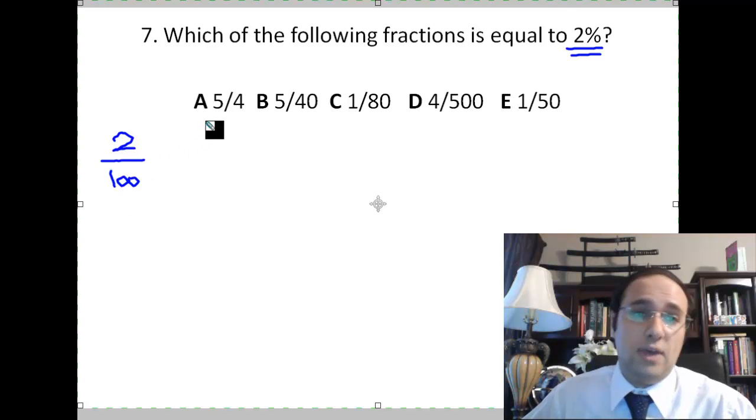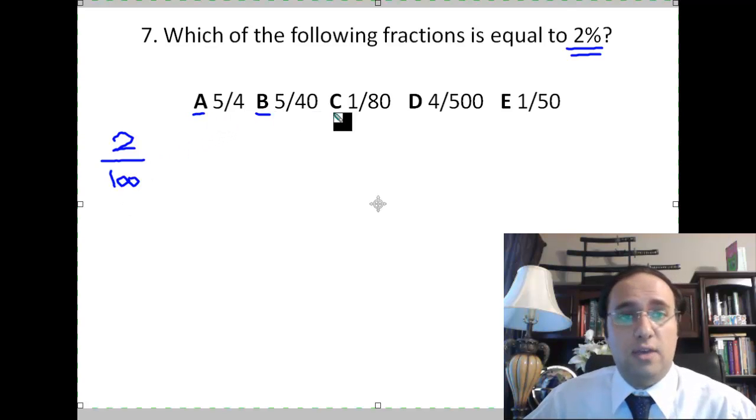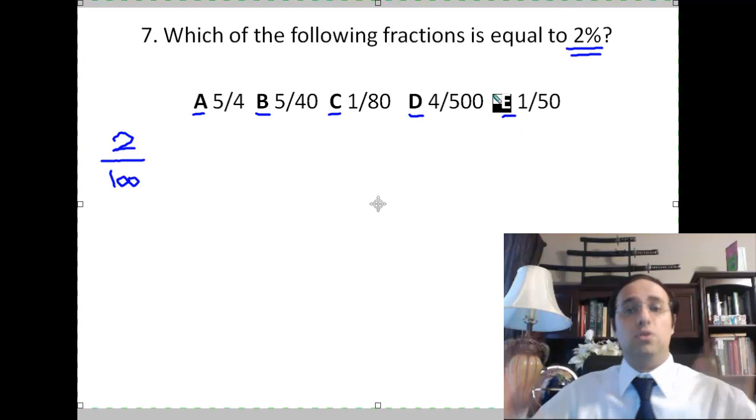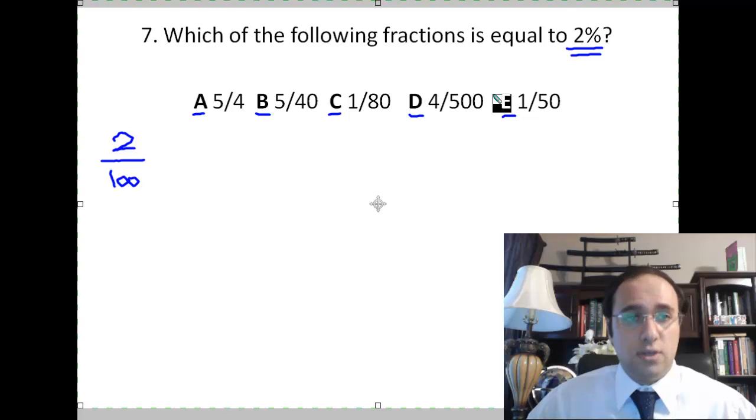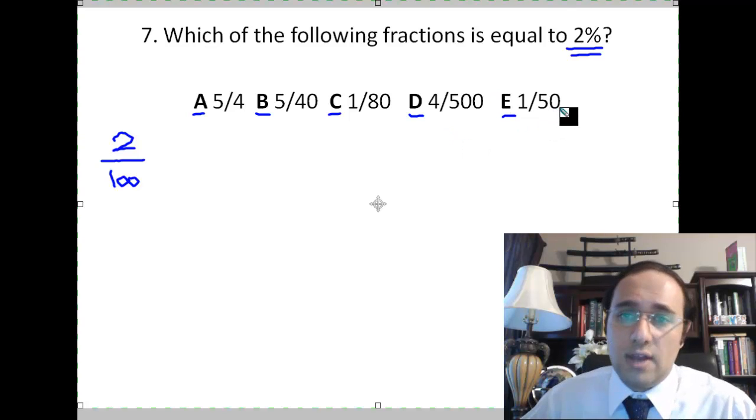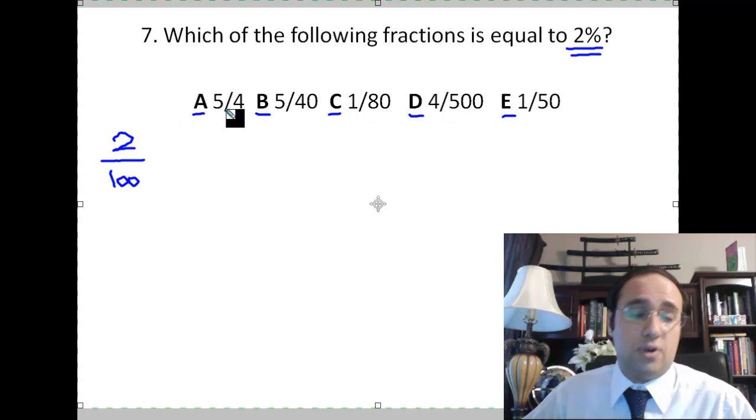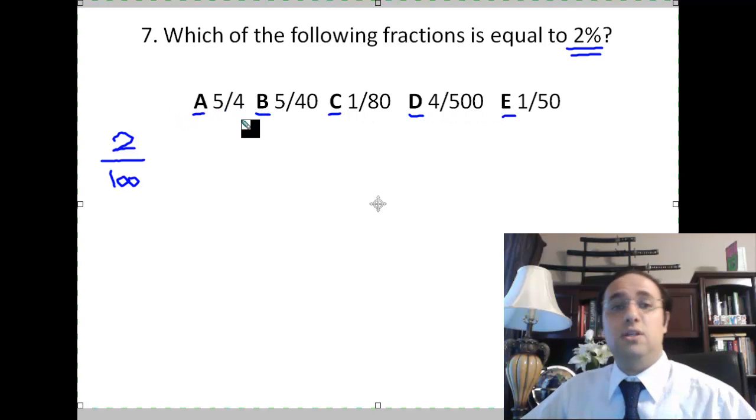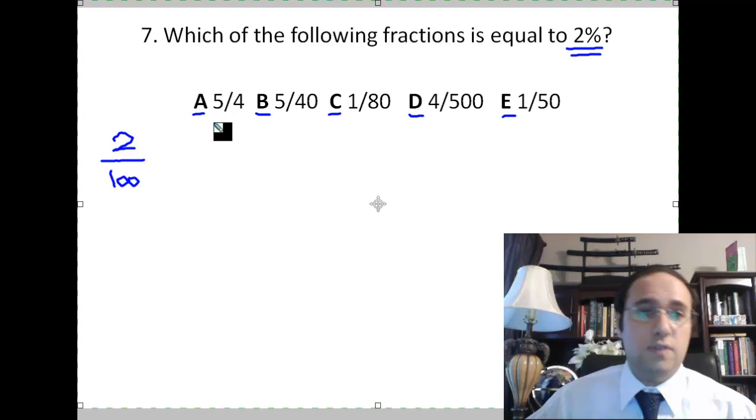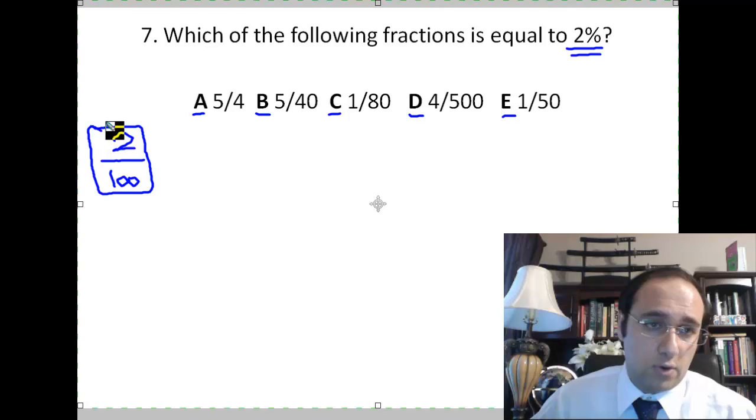Basically, we have five fractions right here, A, B, C, D, and E. And I want to find out which one of these five fractions is equal to 2 over 100. You'll notice that none of the denominators are 100, which means that I need to transform each of these numbers into something over 100 and find which one is 2 over 100.